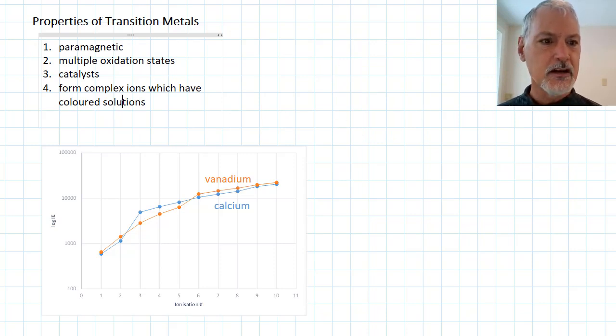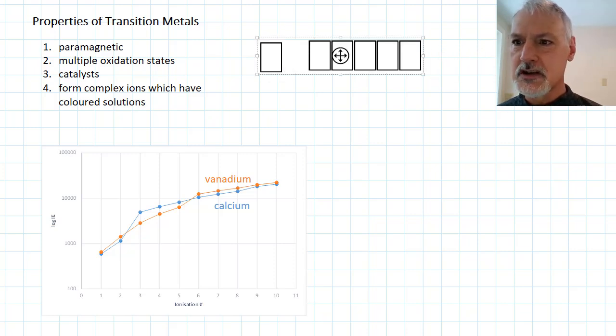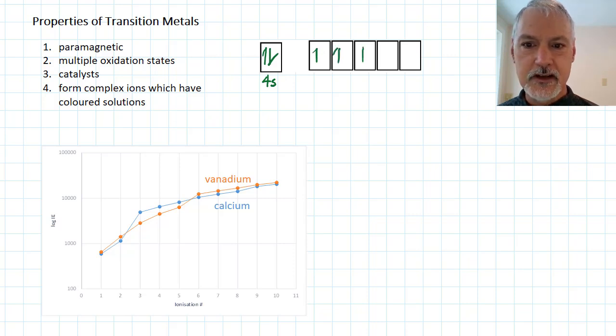They're what we consider paramagnetic. For that, I want to return to the highest energy level of our example iron from before. So from before, in the 4s orbital, iron had one here. And then it proceeded to put the remaining six electrons here. Here, and here, in the 3d. For a substance to demonstrate what we call paramagnetism, it must have unpaired electrons.